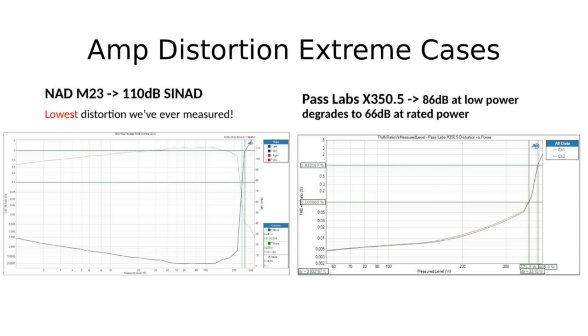I want to show two examples of different amplifiers I've measured in the past. The NAD M23 on the left is the lowest distortion amplifier I've ever measured. I actually had to redo my test fixture to make these kind of measurements - 110 dB SINAD. I think theoretical on the Purifi modules is like 116 or 117, so the fact that NAD was able to productize this platform into its own box and get that kind of distortion performance is quite remarkable. You can see the amplifier just keeps very low distortion all the way up to the knee where it goes from horizontal to vertical.